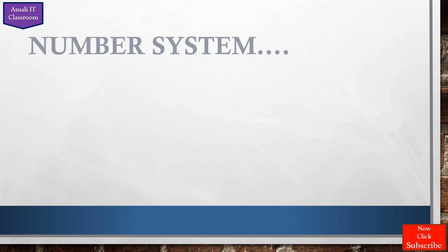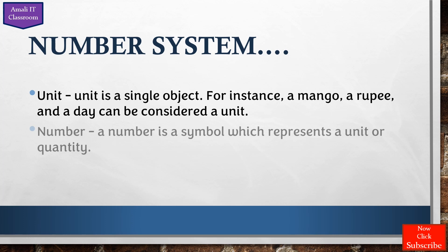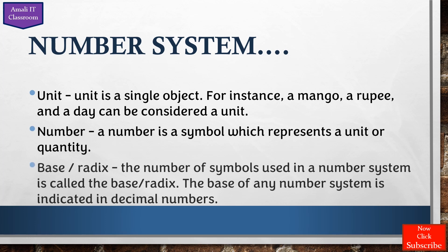In a number system, we should know three words: unit, number, and base or radix. A unit is a single object — for example, a mango, a rupee, or a day. A number is a symbol representing a unit or quantity. The base or radix is the number of symbols used in a number system. If eight values are used, we call it base 8; if two values are used, we call it base 2. The base of any number system is indicated in decimal numbers.